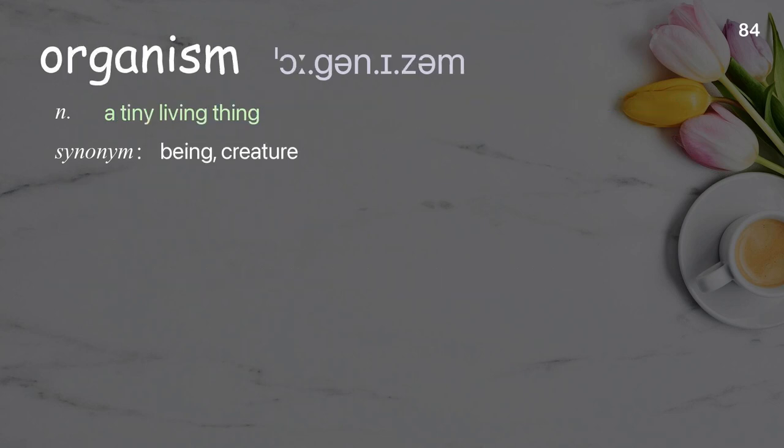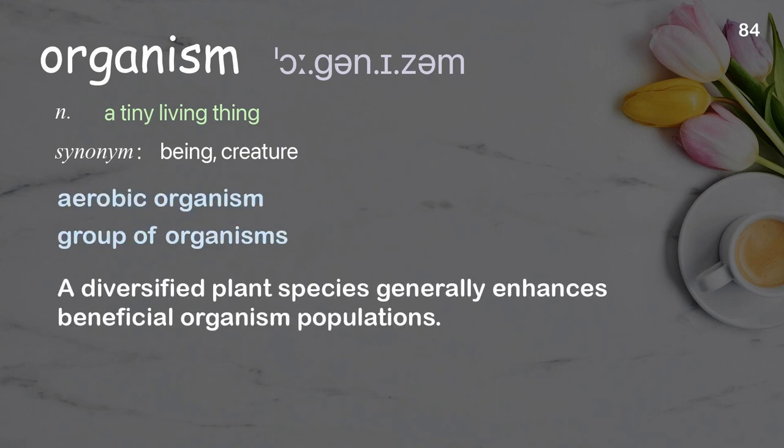Organism: a tiny living thing. Examples: aerobic organism, group of organisms. A diversified plant species generally enhances beneficial organism populations.